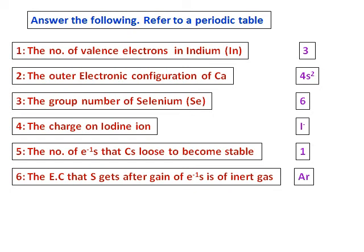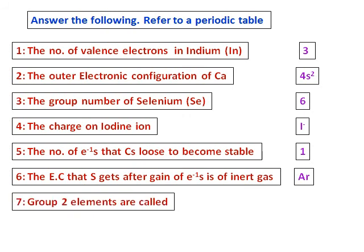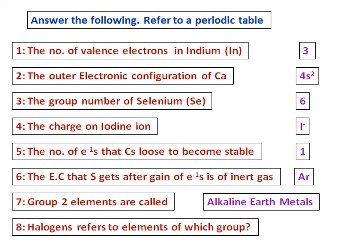The electronic configuration that sulfur gets after gain of electrons is of the inert gas argon. So when sulfur gets 2 electrons, it will get the inert gas configuration of argon. Group 2 elements we call alkaline earth metals. Halogens refer to elements of which group? We know that group 7 elements are called halogens.